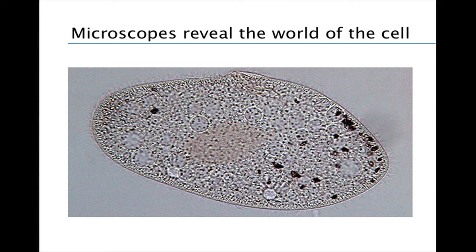A light microscope works by passing visible light through a specimen, such as a microorganism or a thin slice of animal or plant tissue. Magnification is the increase in the apparent size of an object, whereas resolution is a measure of the clarity of an image. By the mid-1800s, the discovery of cells led to the Cell Theory, which states that all living things are composed of cells and that all cells come from other cells.